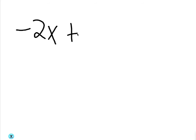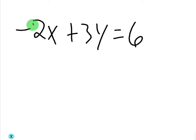Let me give you an example. Let's say you have negative 2x plus 3y equals 6. Do you think that the slope is negative 2? You would think so because it's next to the x, but it's not, because y is not by itself. You've got to get y by itself first. In the same way, do you think that 6 is the y-intercept? No — y has to be by itself.